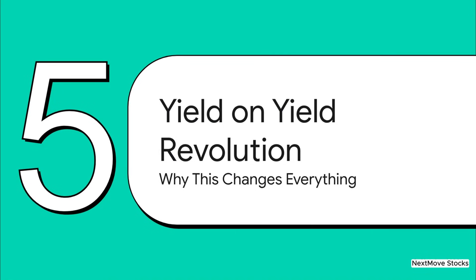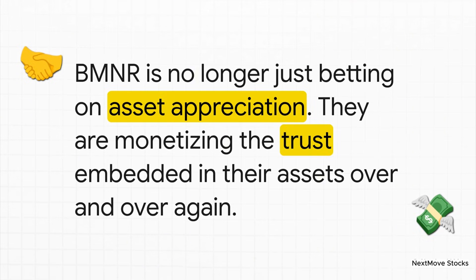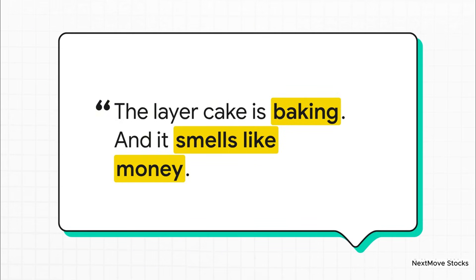To wrap this all up, let's zoom out. This isn't just a story about one company or one financial model — this represents a fundamental change in the economic engine of the entire digital asset world. We're at the very beginning of the yield-on-yield revolution. The business model for crypto infrastructure is changing. It's not just about hoping the price of your asset goes up anymore. It's about building a business that monetizes the trust that's baked into those assets. We're talking about the velocity of trust — this idea that trust can be rented out, reused, and put to work securing an entire ecosystem, generating more and more yield at every single step. We're moving from a passive, single-job world to an active, multitasking one where capital efficiency is everything. For the sophisticated, industrial-scale players who can handle the risks, the opportunity is just immense. As the source material puts it: the layer cake is baking. And it smells like money.